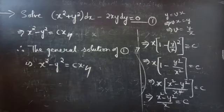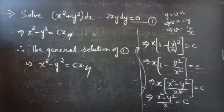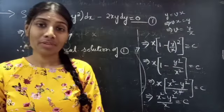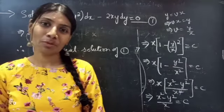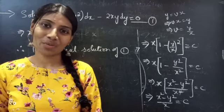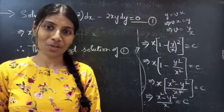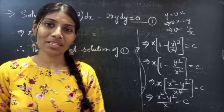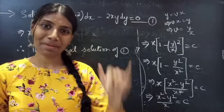Therefore, the general solution of the given equation is x squared minus y squared equals cx. We have seen a problem from differential equations in this video. Hope you will understand. We will see you in the next video. Until then, bye-bye.